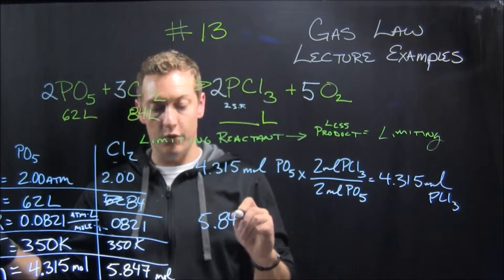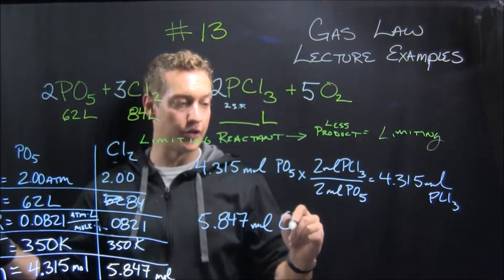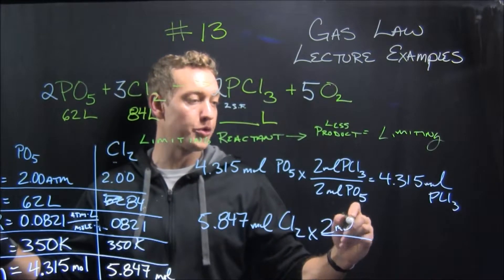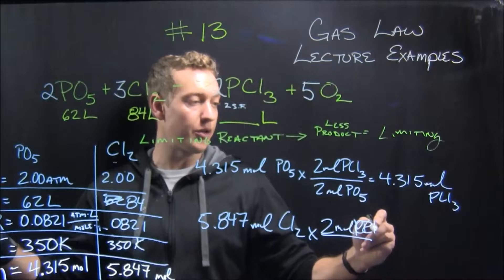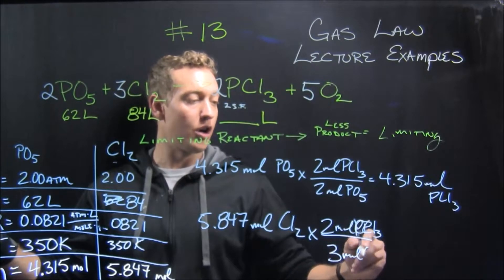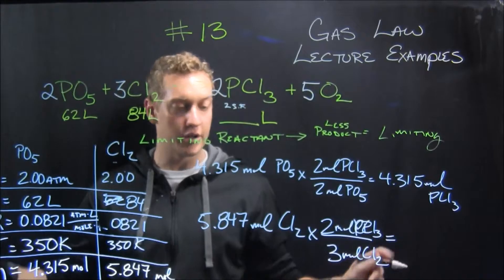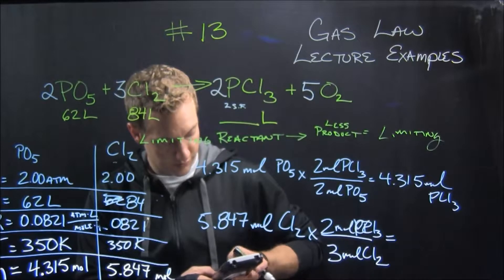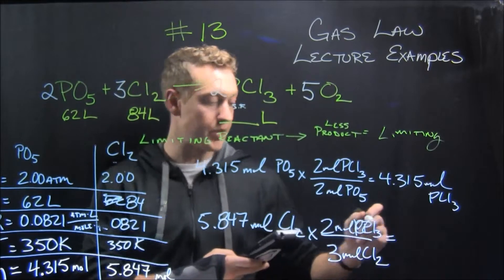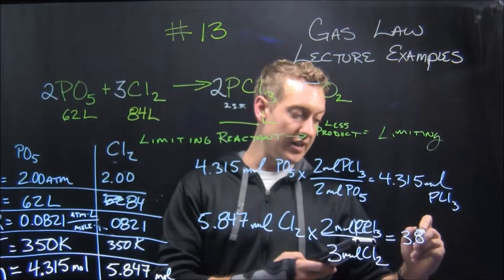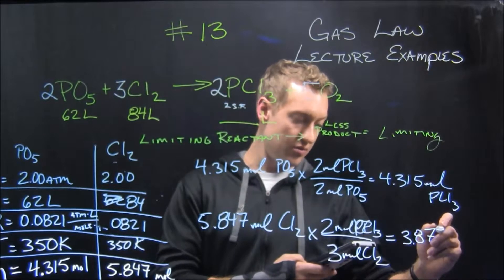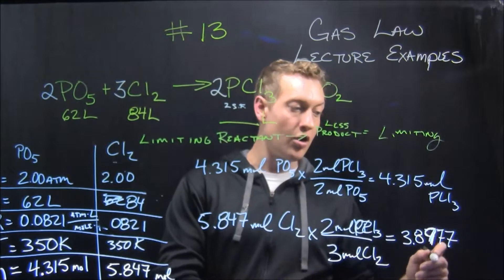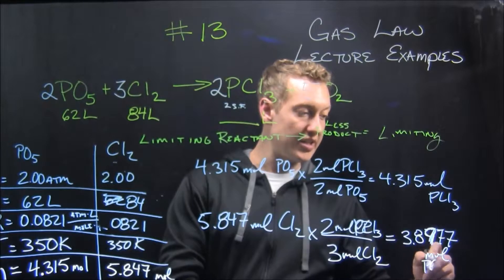5.847 moles of CL2 times, that's a 2 to 3 ratio, 2 moles of PCL3 for every 3 moles of elemental chlorine. So that I have to punch in the calculator, and that comes out to be 3.8977 moles of PCL3.